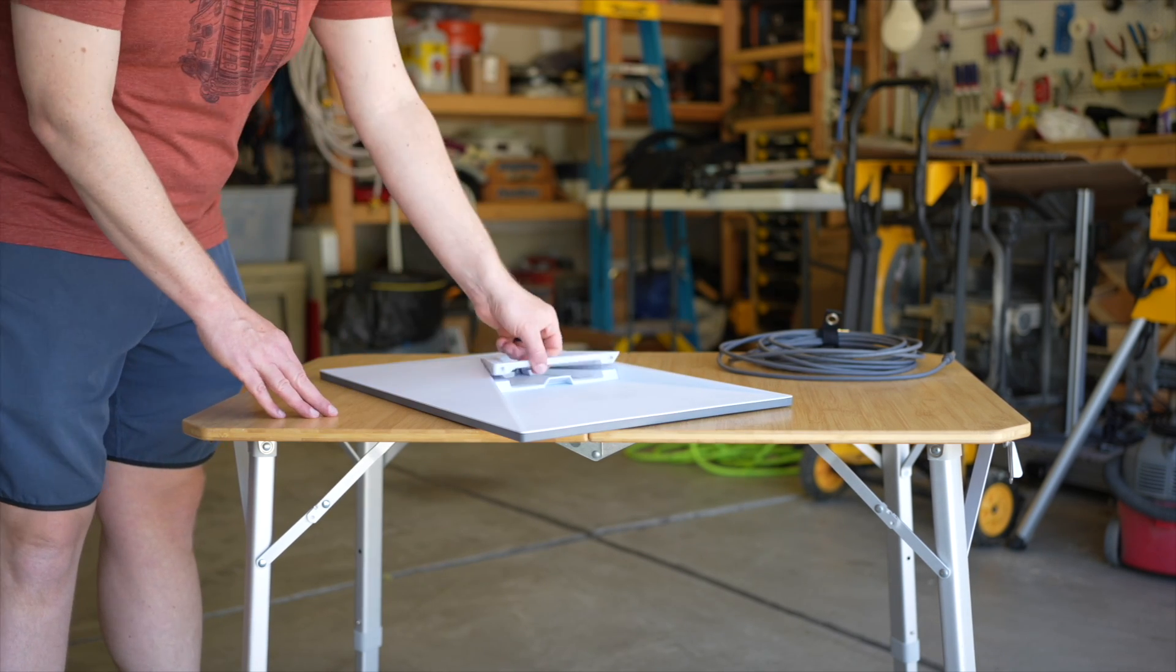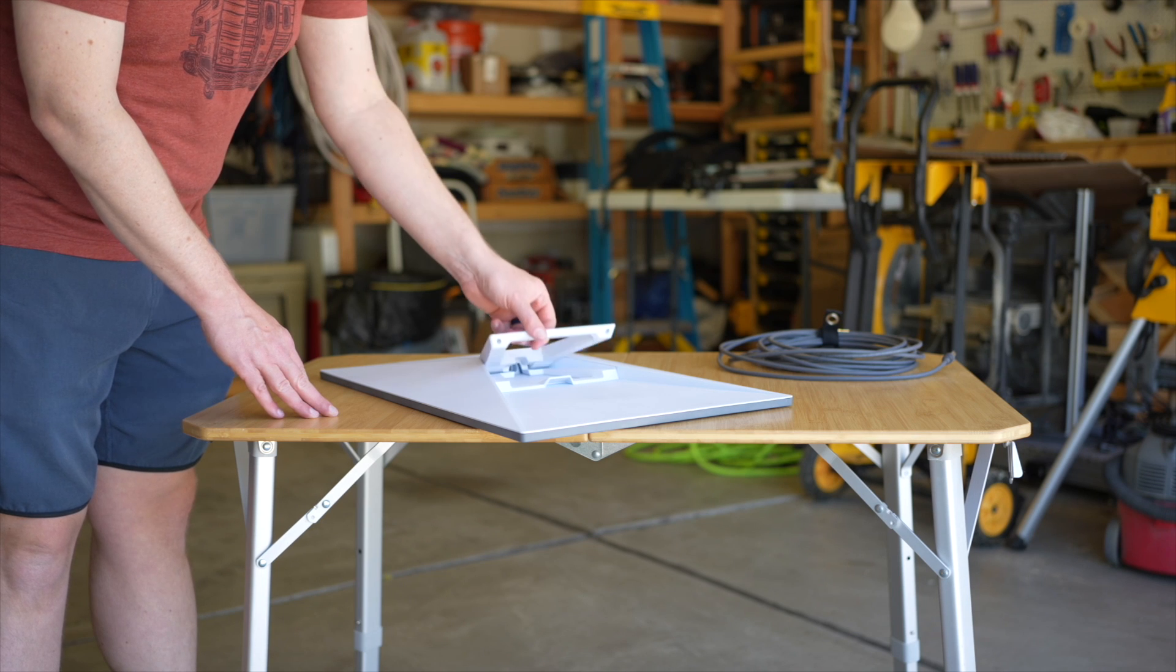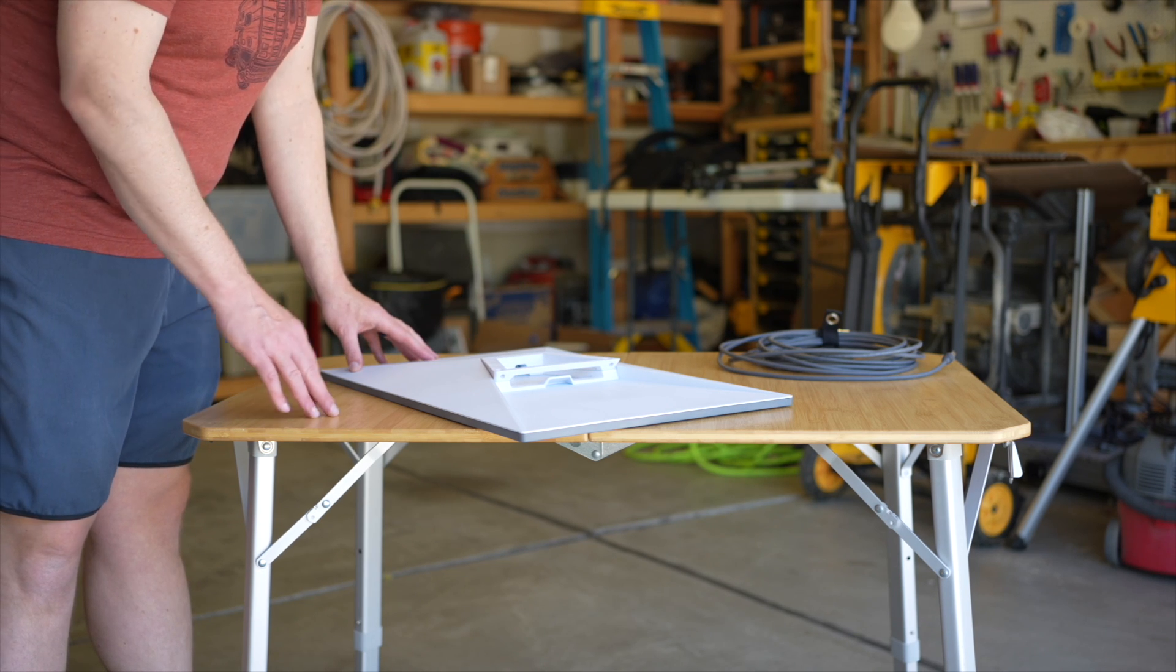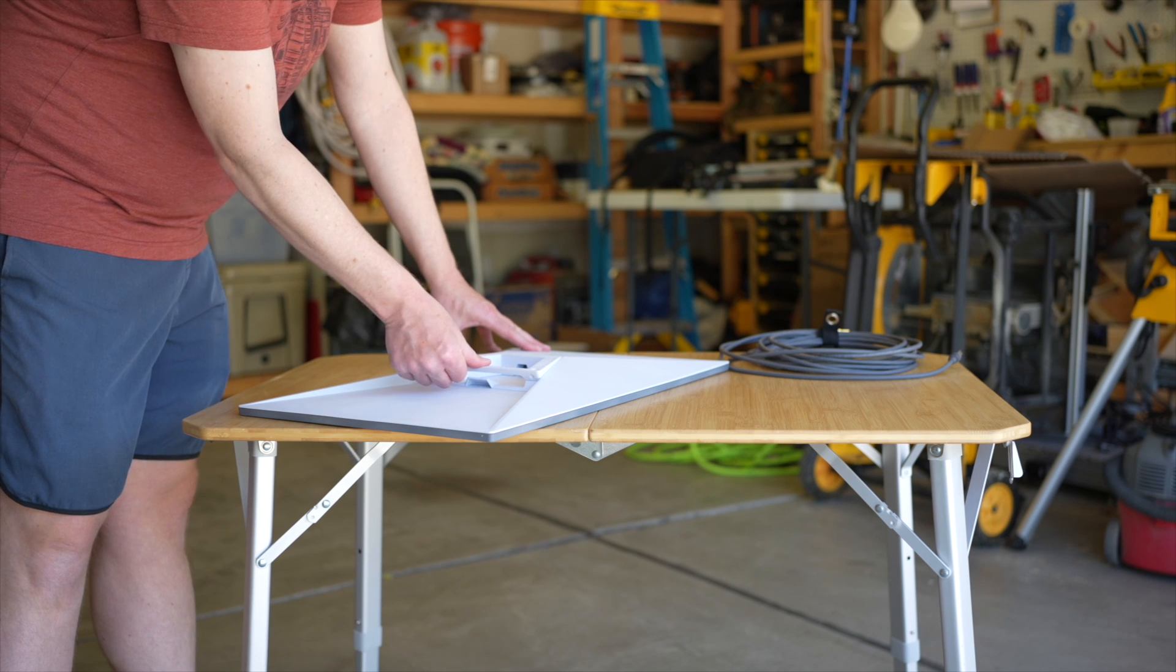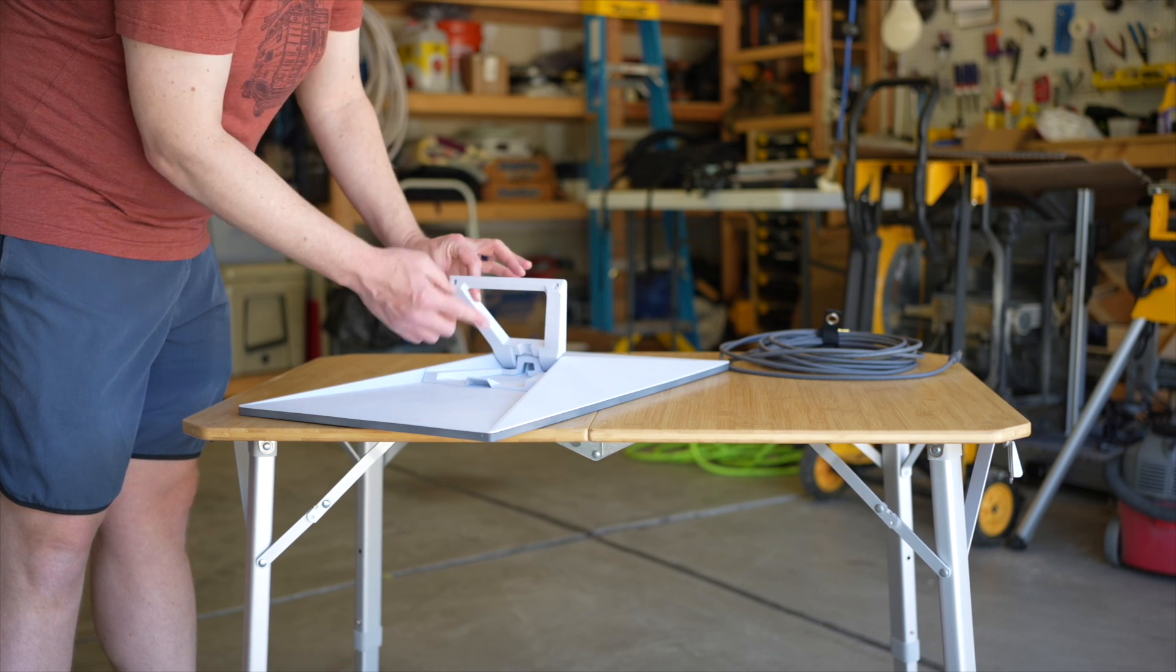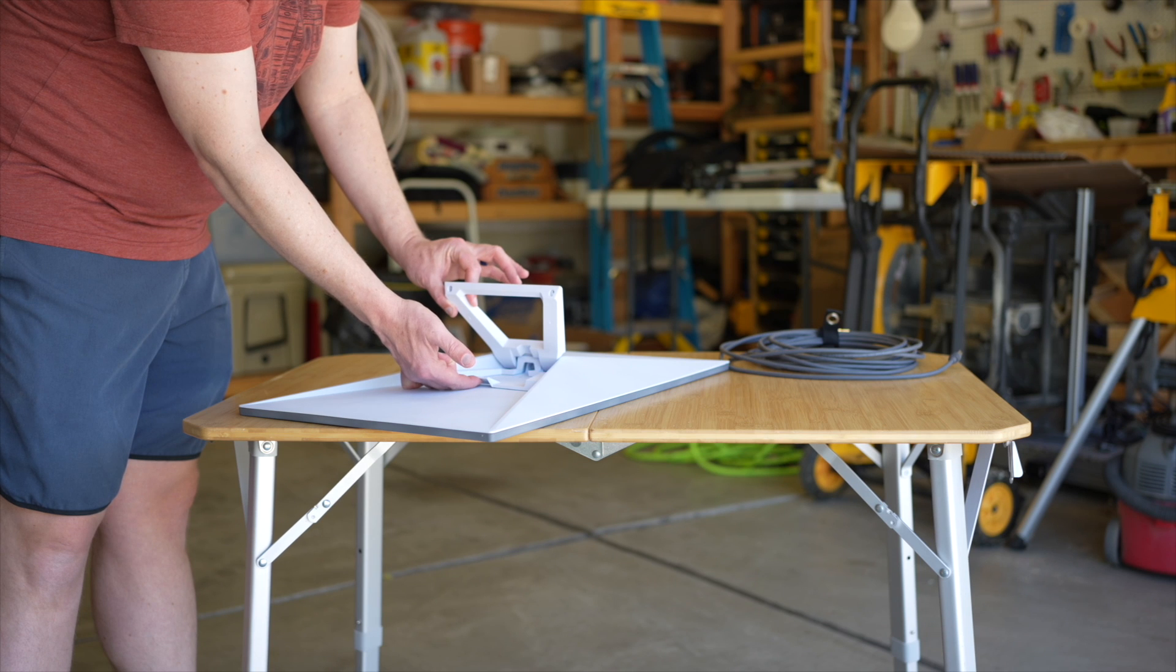First we're going to flip this over. You can see your kickstand here. When you remove it you want to make sure that you put two fingers in here like so and then you hold one thumb on top. You don't want to do this with this up because you can put too much pressure here and break this.